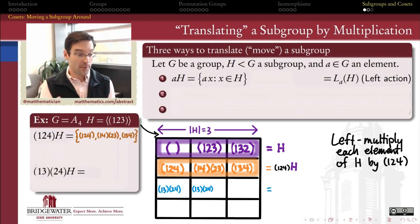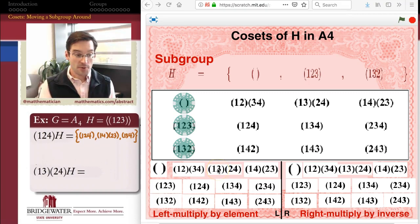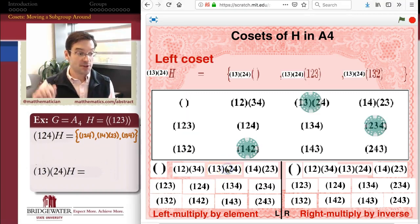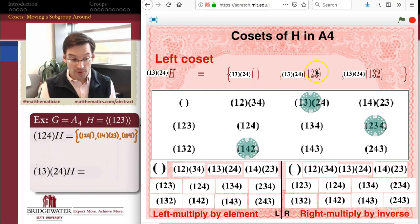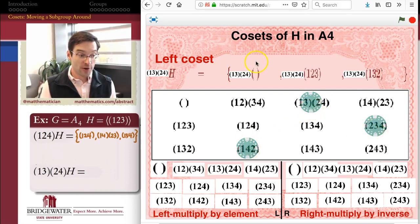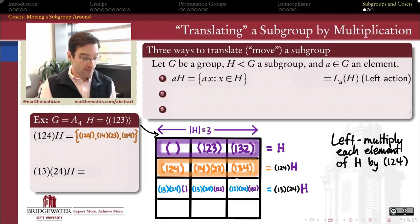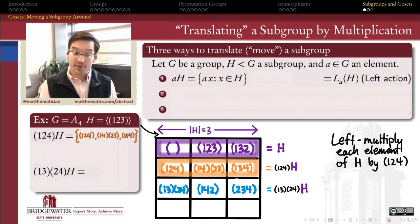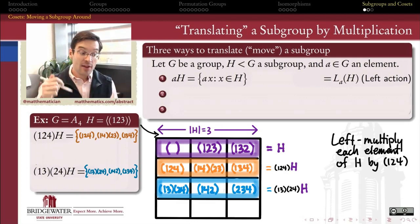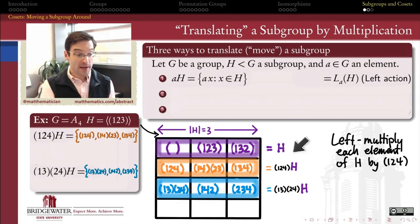Does that always happen? Let's try applying a left action by another element — say (1 3 2 4) acting on the left of H. To visualize what's happening, I'm going to select the left multiplication by (1 3 2 4) on the subgroup H. It's going to have elements (1 3 2 4) times identity, (1 3 2 4) times (1 2 3), and (1 3 2 4) times (1 3 2). That gives me the product of disjoint two-cycles (1 3)(2 4), then (1 4 2), and (2 3 4). What you'll notice is that again we've gotten three distinct elements in this left coset, and these are three different elements than we saw in the first two rows. No elements overlap at all — and that's an important observation.